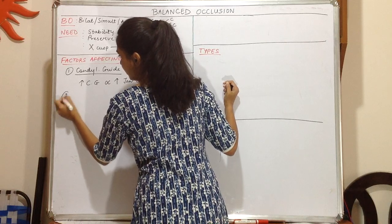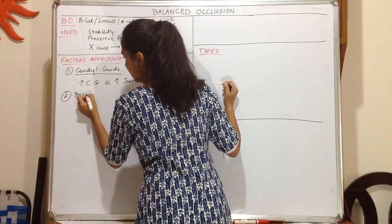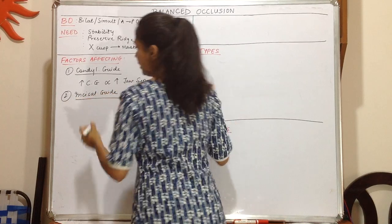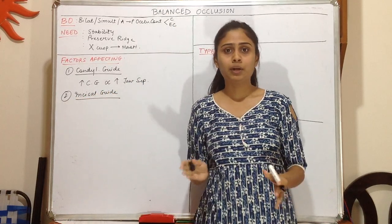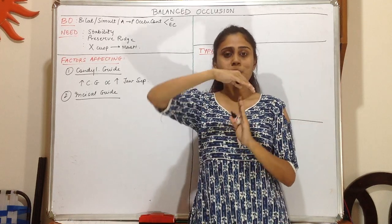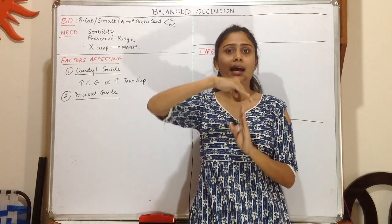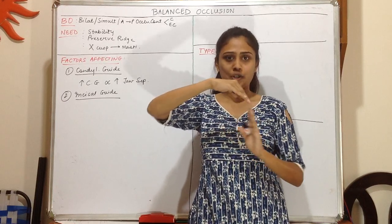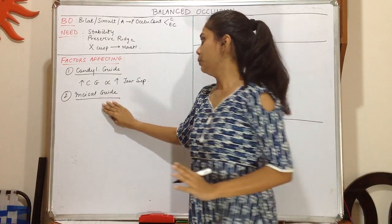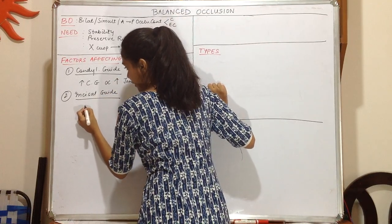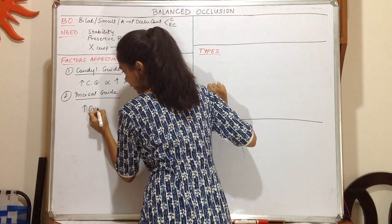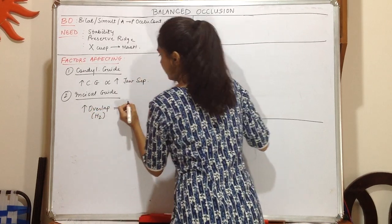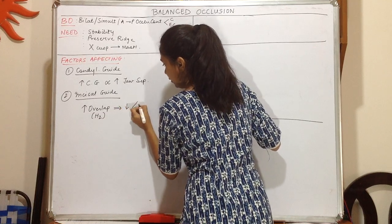Next we have incisal guidance. Incisal guidance is the influence of the contact between the mandibular and the maxillary anterior teeth on the mandibular movements of the jaws. The significance is that when the horizontal overlap is increased, there is a decrease in the angle of inclination.